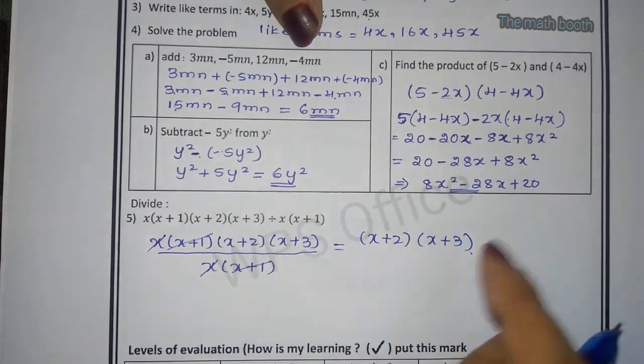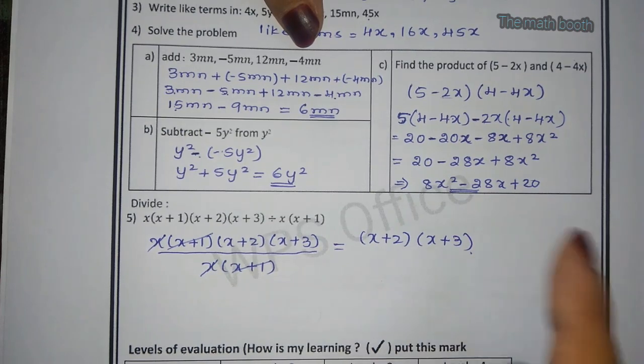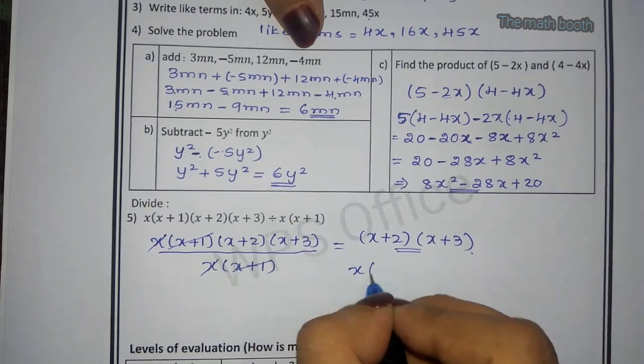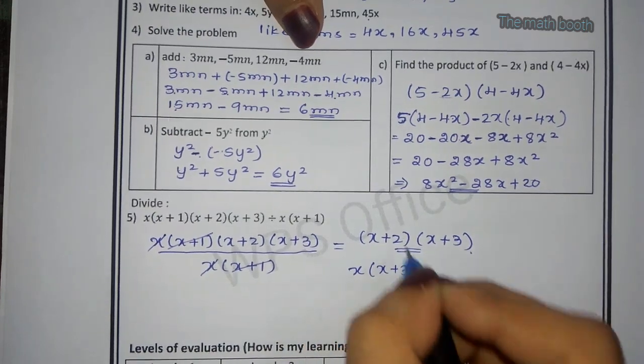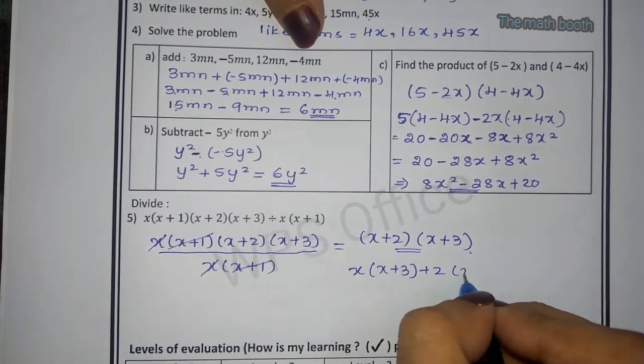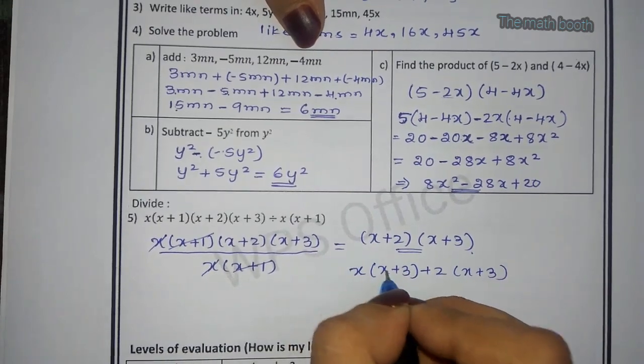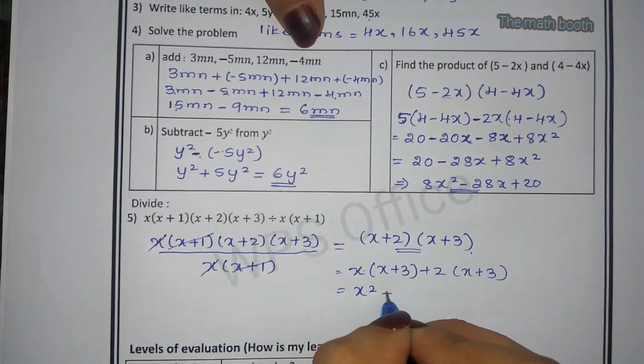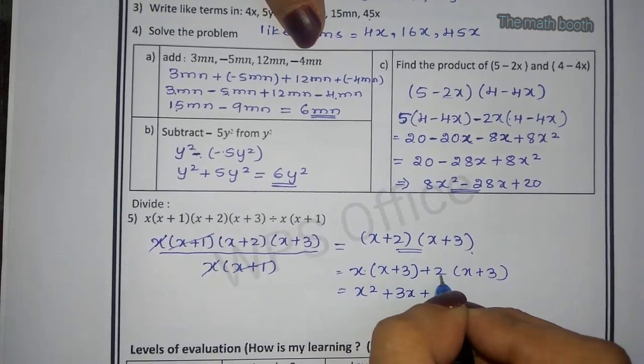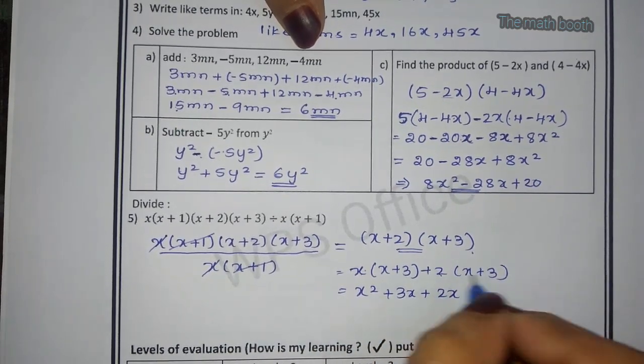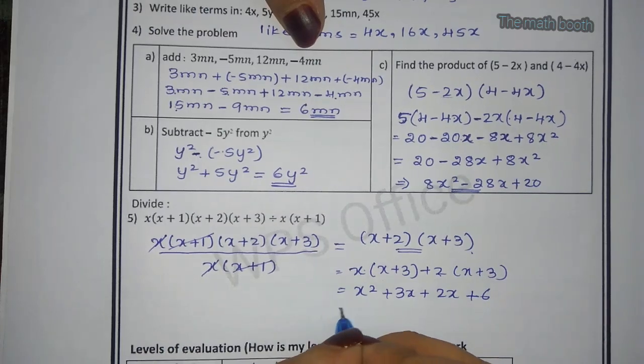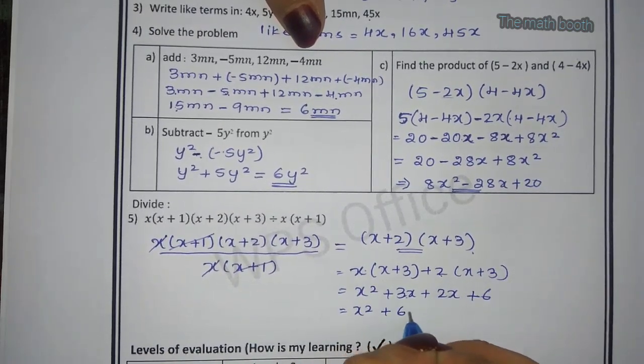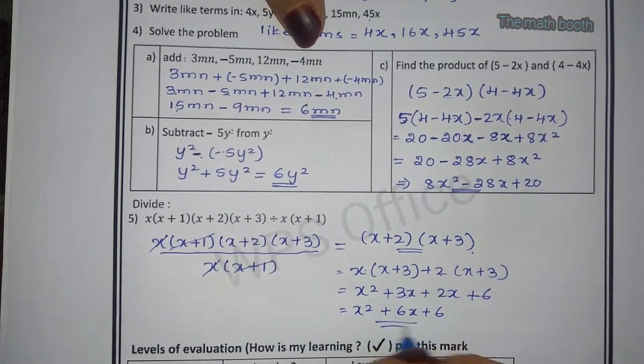So we have divided, we got this answer. If they told again to solve, we can split this. X keeping as it is: x plus 3, then plus 2, x plus 3. So x into x is x square, x into 3 is 3x, plus 2 into x is 2x, 2 times 3 is 6. Now x square, 3x plus 2x like terms, 5x plus 6. This is also can be answered, or this you can keep this as also answered.